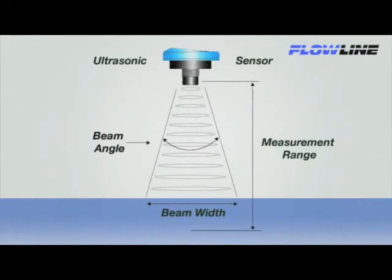These same physics apply to ultrasonic sensors. Here, the path of sound is called beam width. Beam width is largely determined by the beam angle of the transducer, which is typically 8 to 12 degrees on most ultrasonic sensors.